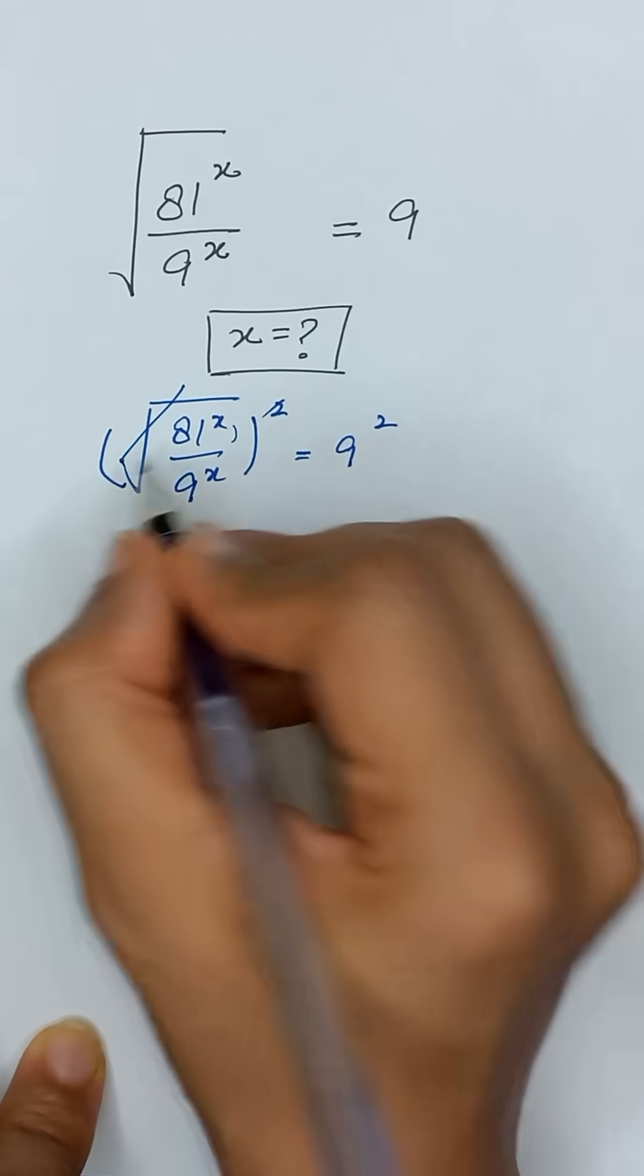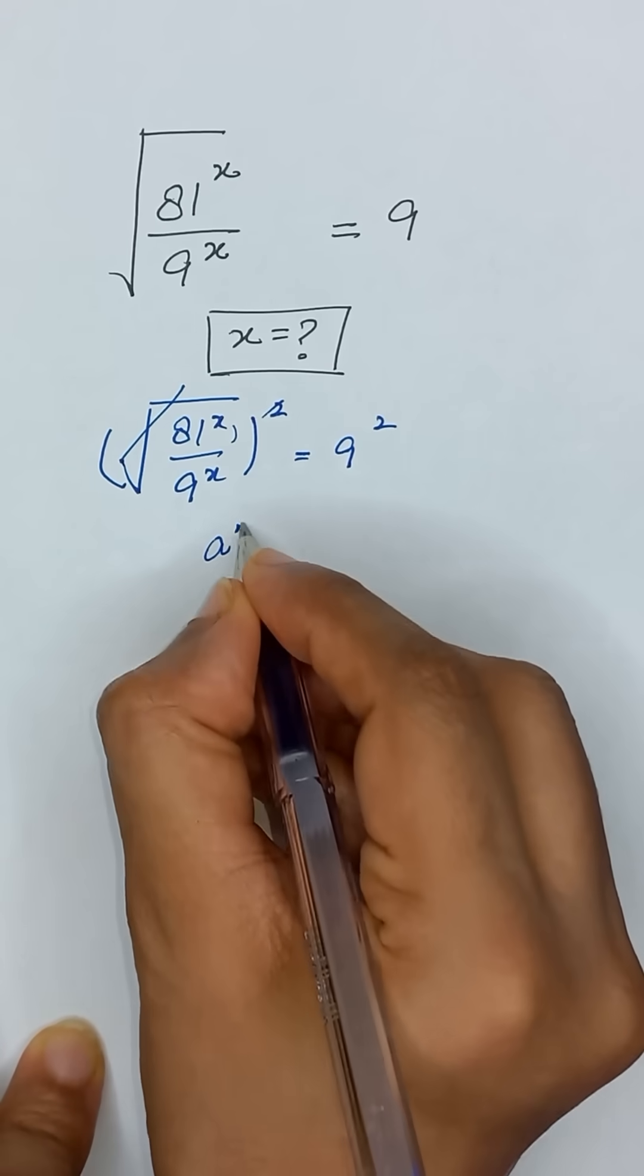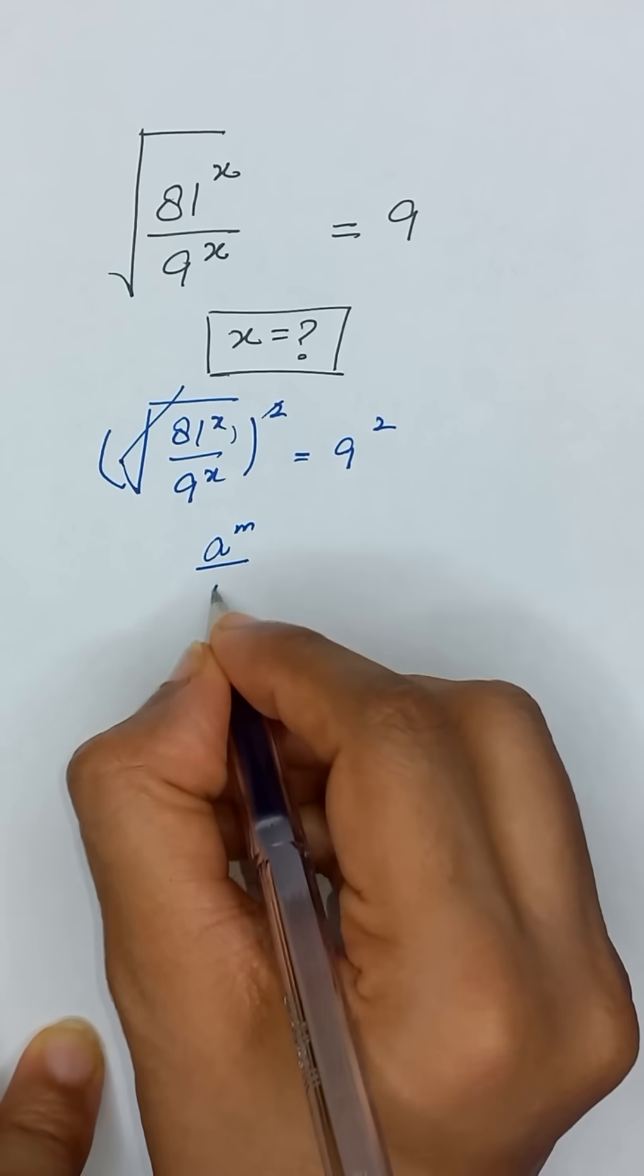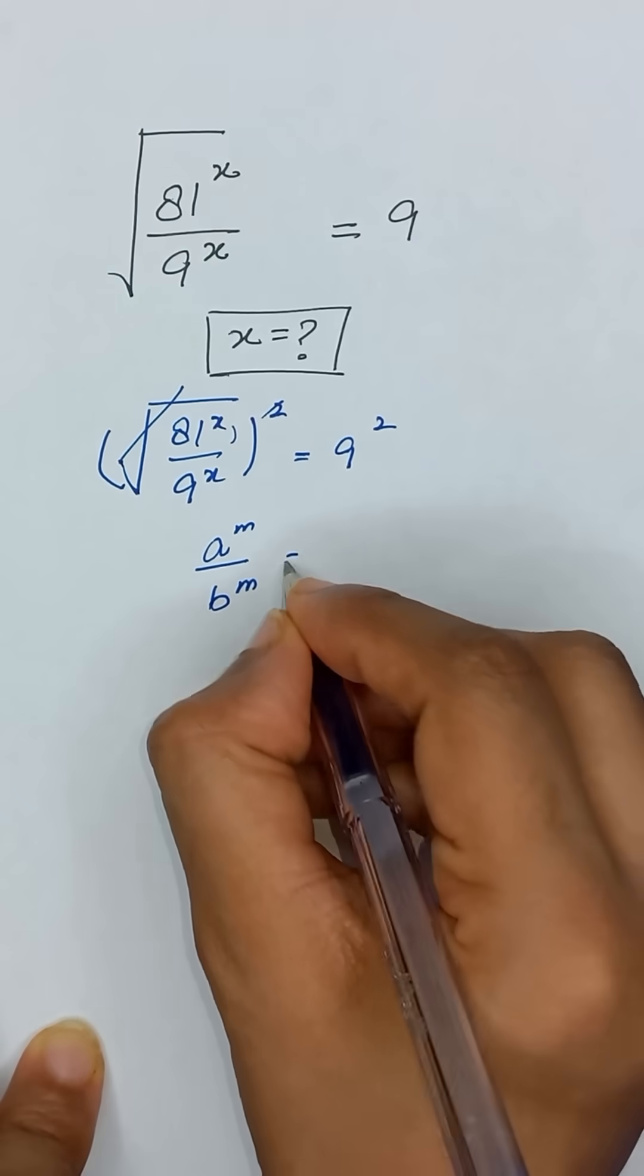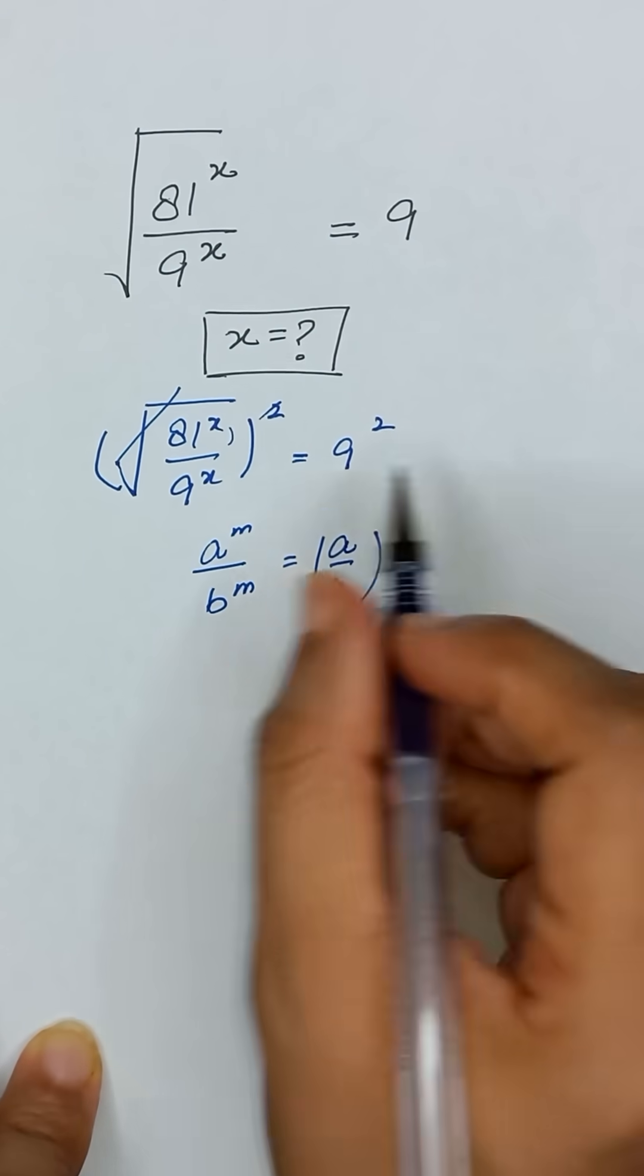So it will be cancelled out, and it is in the form of a to the power m divided by b to the power m, which can be written as a divided by b to the whole power m.